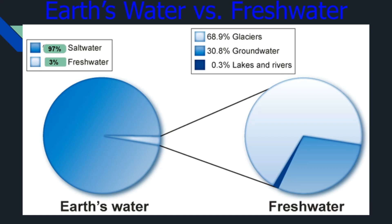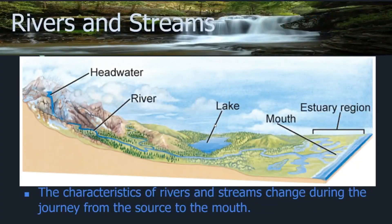Let's go over a graph to help you better solidify the previous knowledge. As you can see, we're breaking down the 3% into percentages. Rather than memorizing all the exact figures, just remember it as 69%, 31%, and 0.3% to simplify things.